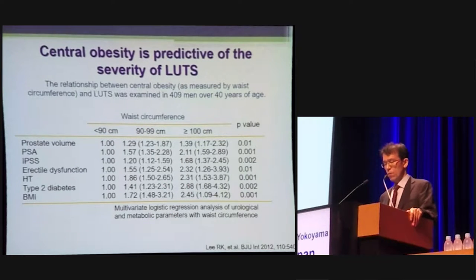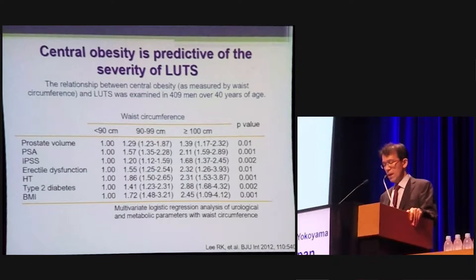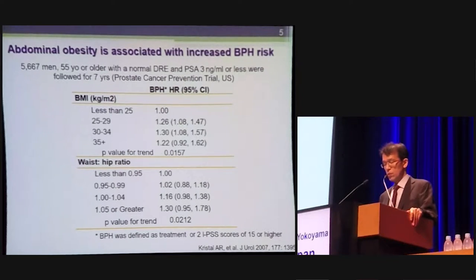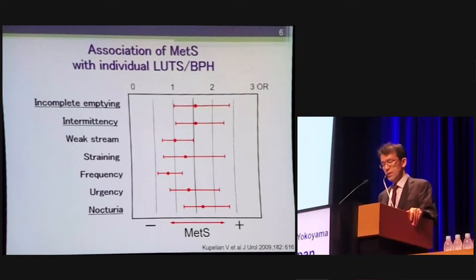Increasing evidence has pointed to a relationship between obesity and LUTS. This relationship is supported by recent epidemiological findings. This slide shows the relationship between central obesity as measured by waist circumference and LUTS in men over 40 years of age. Note that prostate volume and PSA increased with increasing waist circumference. Another epidemiological finding was from 5,000 men followed for seven years: BMI and abdominal obesity calculated by waist-to-hip ratio were associated with increased BPH risk.